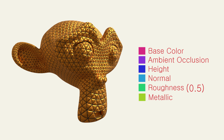So those are the basics of the main maps of a PBR material. There is more information and more maps that we could talk about, like vector displacement maps and emission maps, but those are more specific. If you want to read more about it, check out the links in the description.